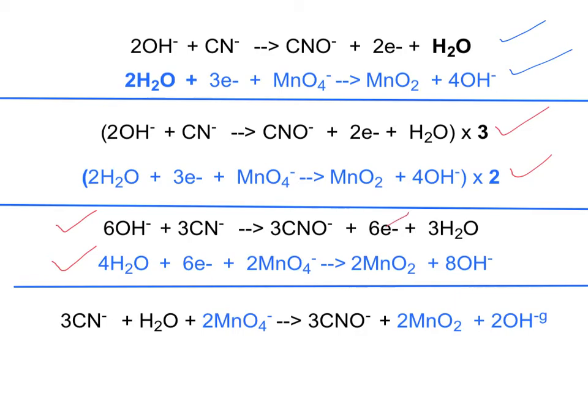Now, our electrons cancel, and we add these two together. When we add these two together, the substances that are present on both sides of the reaction will cancel and subtract from one another. We have six hydroxide ions over here, and then eight. The six hydroxides cancel out, leaving you with simply two hydroxides.